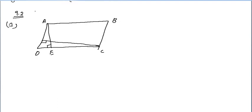Another perpendicular: CF is perpendicular to AD. AB length is 16 centimeters. And AE is equal to 8 centimeters.